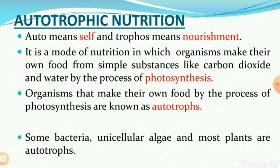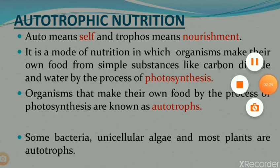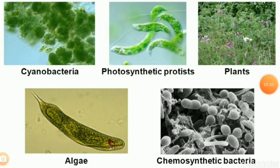Some examples of autotrophs are bacteria, algae, and most plants — such as cyanobacteria or blue-green algae, most plants, algae, and some bacteria. There are also chemosynthetic bacteria, which means they take energy from certain chemicals rather than from sunlight.